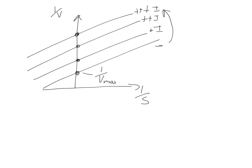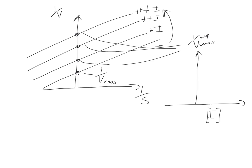In order to get the inhibitor concentration, we would plot a second plot, also called a Dixon plot. In the case of an uncompetitive inhibitor, we plot the inhibitor concentration on the x-axis and 1/Vmax apparent on the y-axis. The x-intercept gives minus Ki for the uncompetitive inhibitor.